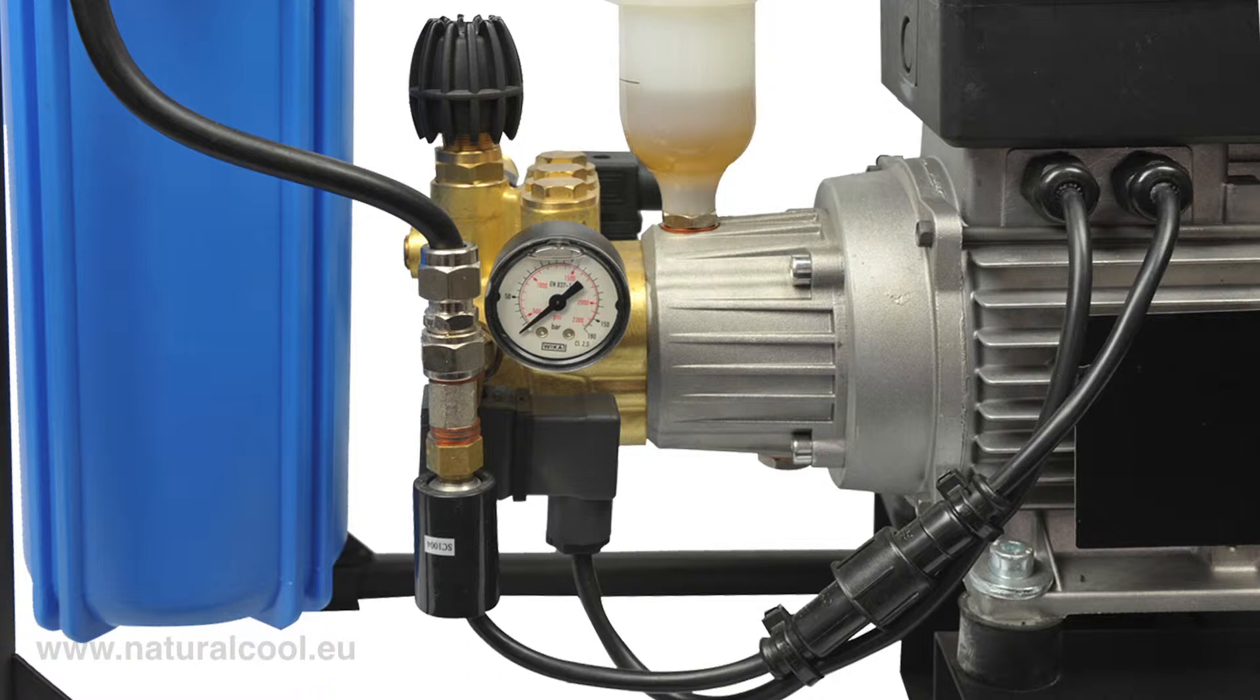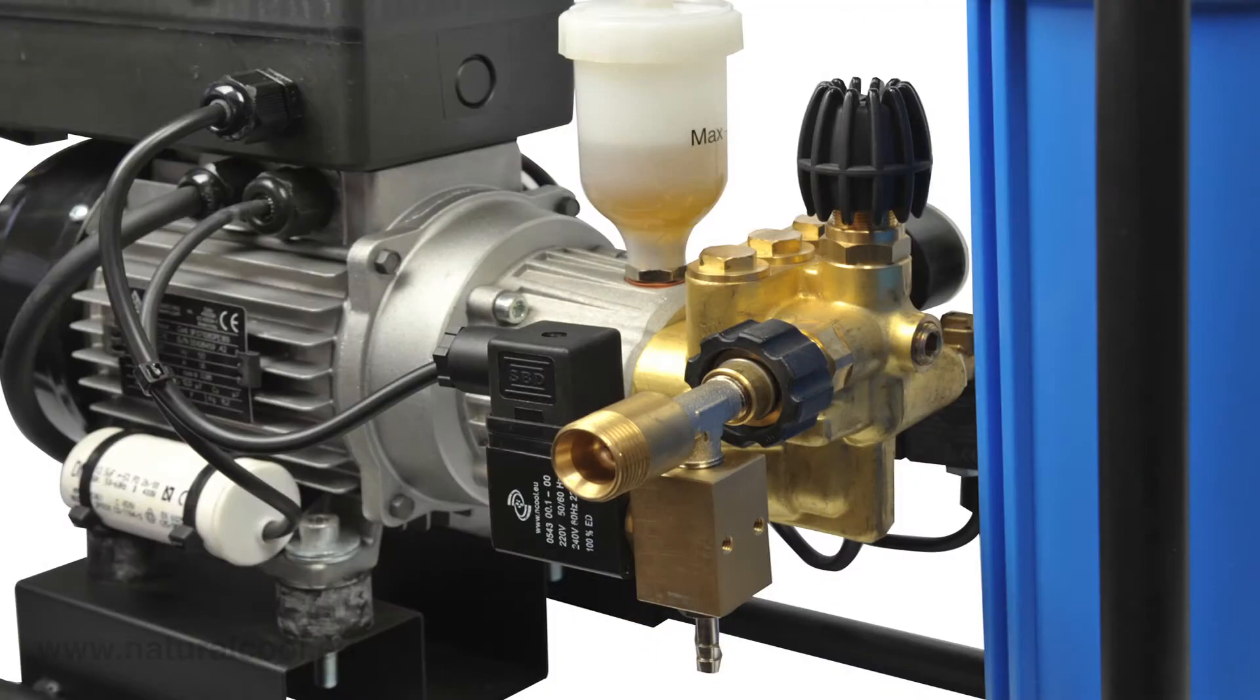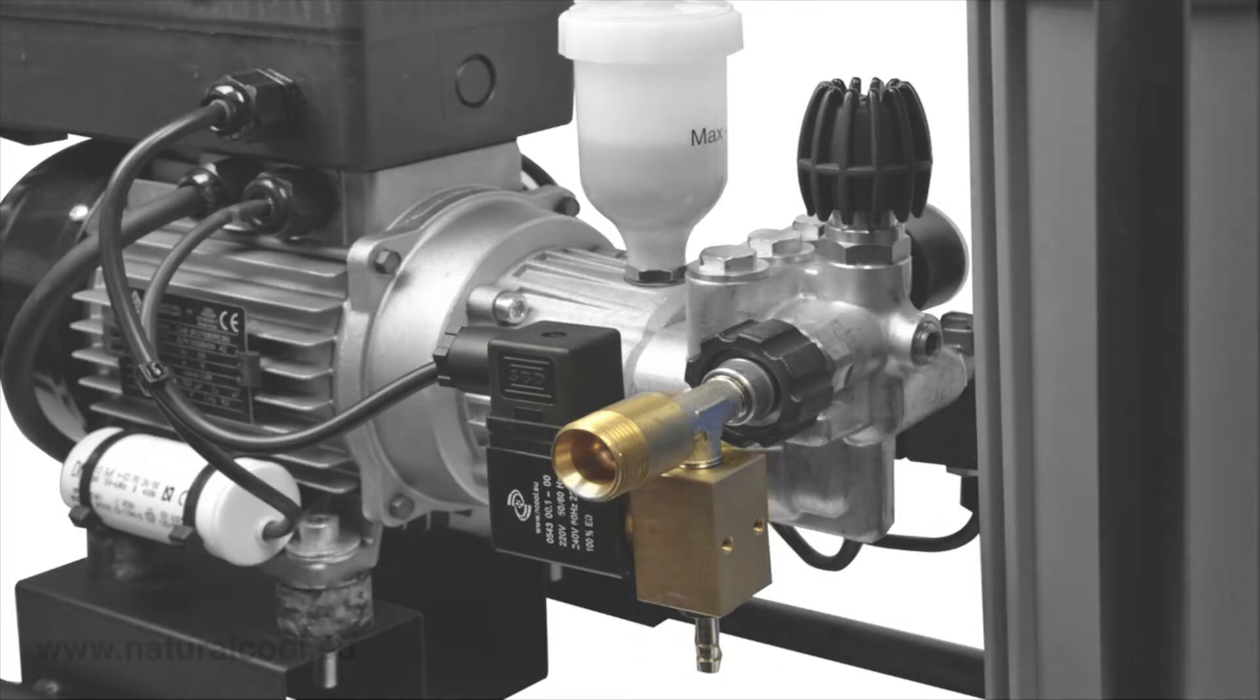A manostat is mounted as standard that stops the pump in the case of a lack of water, together with an inline safety solenoid that stops the water flow whenever the pump is switched off. A further solenoid is present in the high-pressure part that has the task of depressurizing the line every time the control unit is not operating.